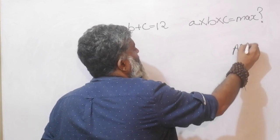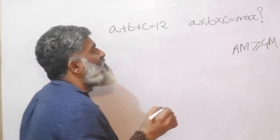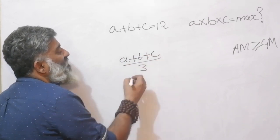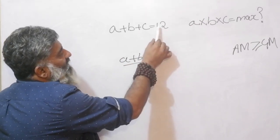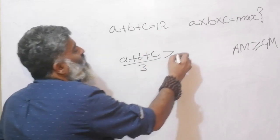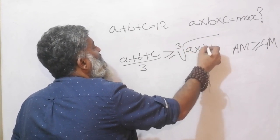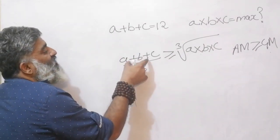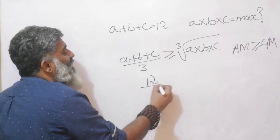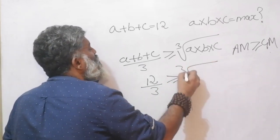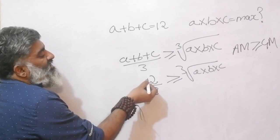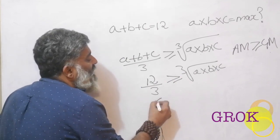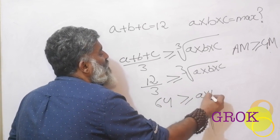Capture this in your notes: AM ≥ GM. For three terms, the arithmetic mean is (a+b+c)/3. Since I already have a+b+c = 12, I write: 12/3 ≥ cube root of (a·b·c), which gives 4 ≥ cube root of (a·b·c). Cubing both sides: 64 ≥ a·b·c.